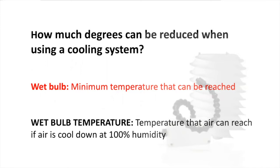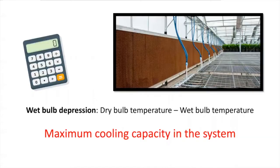Then we have wet bulb. Wet bulb is the temperature that air can reach if air is cooled down at 100% humidity, and it is the minimum temperature that can be reached. By calculating wet bulb temperature, we can get the cooling capacity of the system using the following formula: dry bulb temperature minus wet bulb temperature. We call this wet bulb depression. The result from this formula will tell you the maximum cooling capacity of the system.